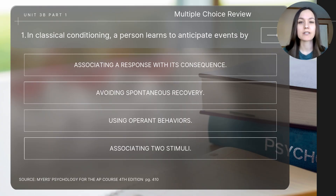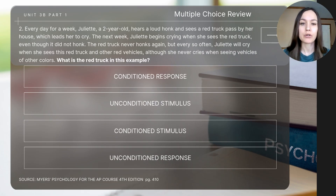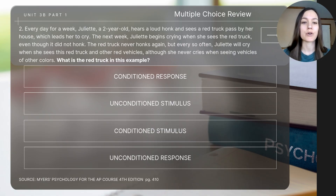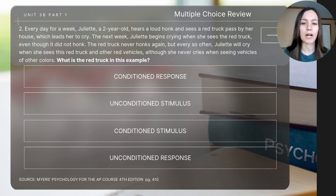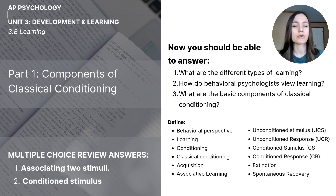Let's finish with a few multiple choice questions. Question one: in classical conditioning, a person learns to anticipate events by... Question two: every day for a week, Juliet, a two-year-old, hears a loud honk and sees a red truck pass by her house, which leads her to cry. The next week, Juliet begins crying when she sees the red truck even though it did not honk. The red truck never honks again, but every so often Juliet cries when she sees the red truck and other red vehicles, although never when seeing vehicles of other colors. What is the red truck in this example? Check the review answers on screen, then answer the key focus questions and define the vocabulary concepts for today's video.